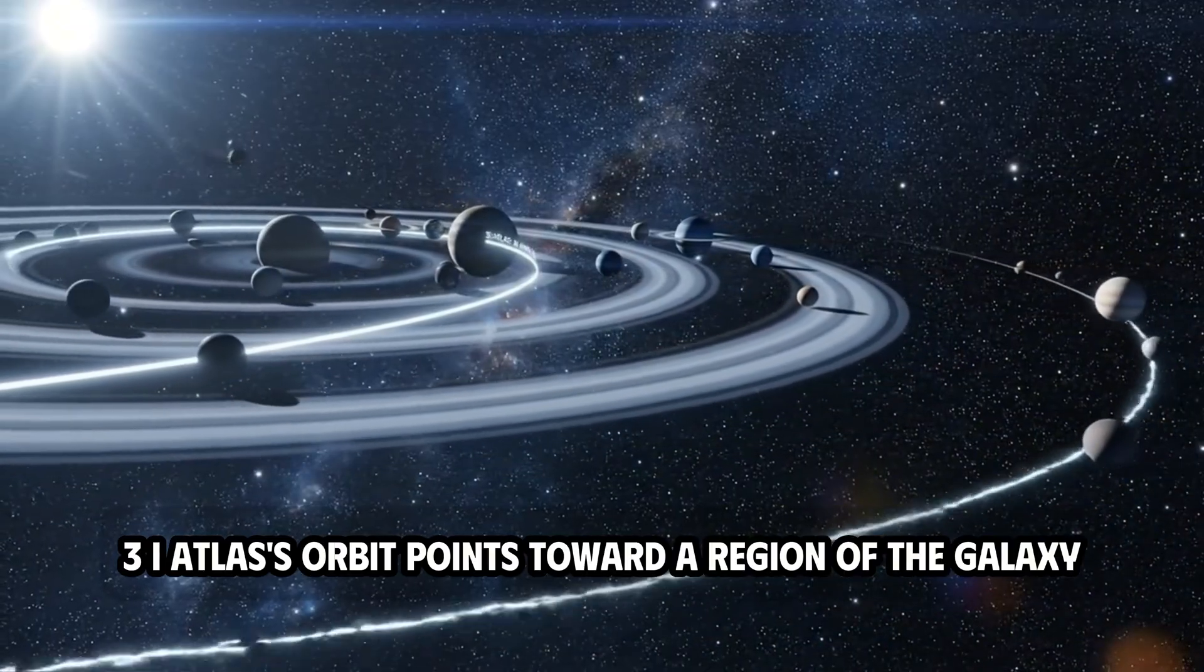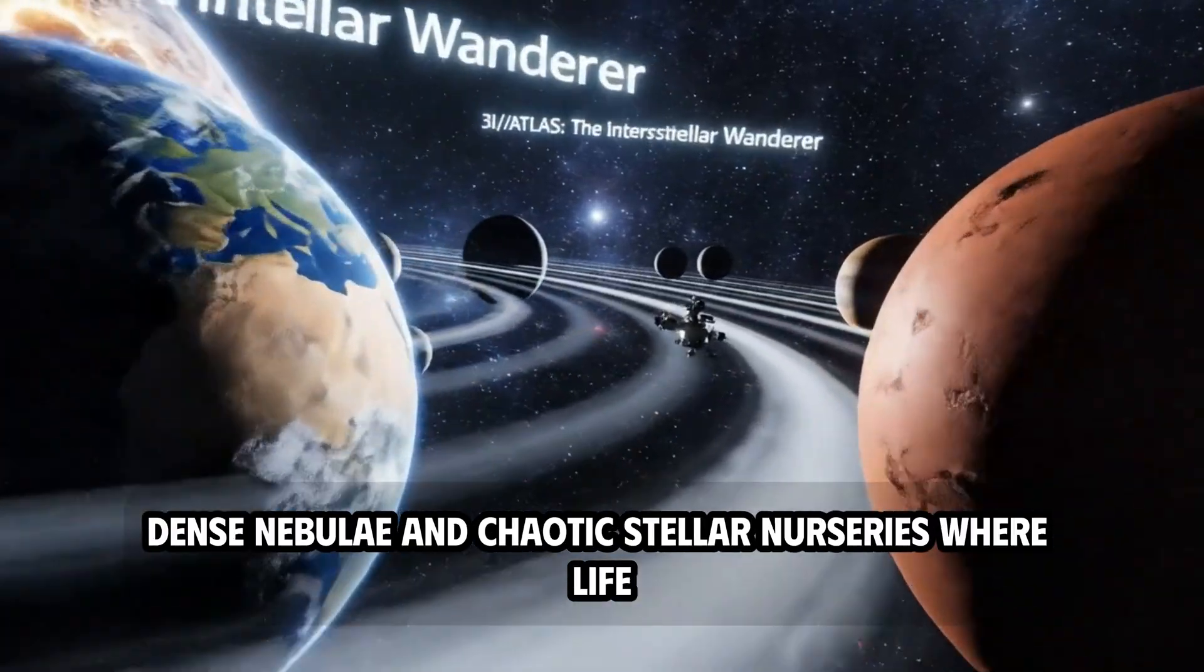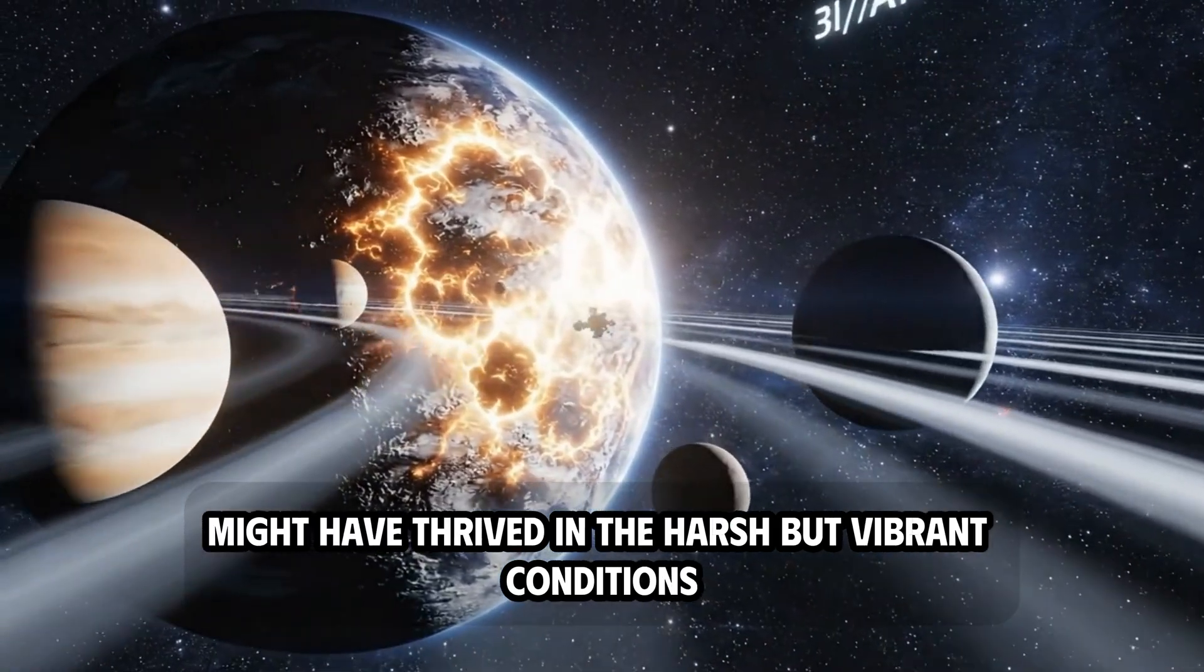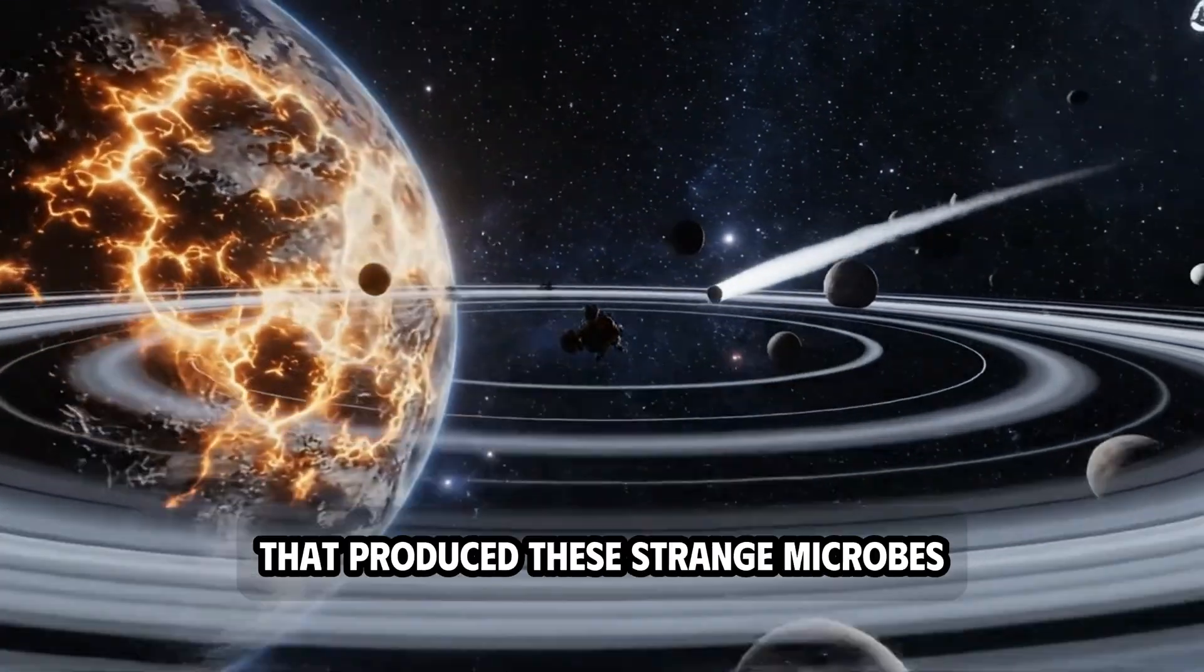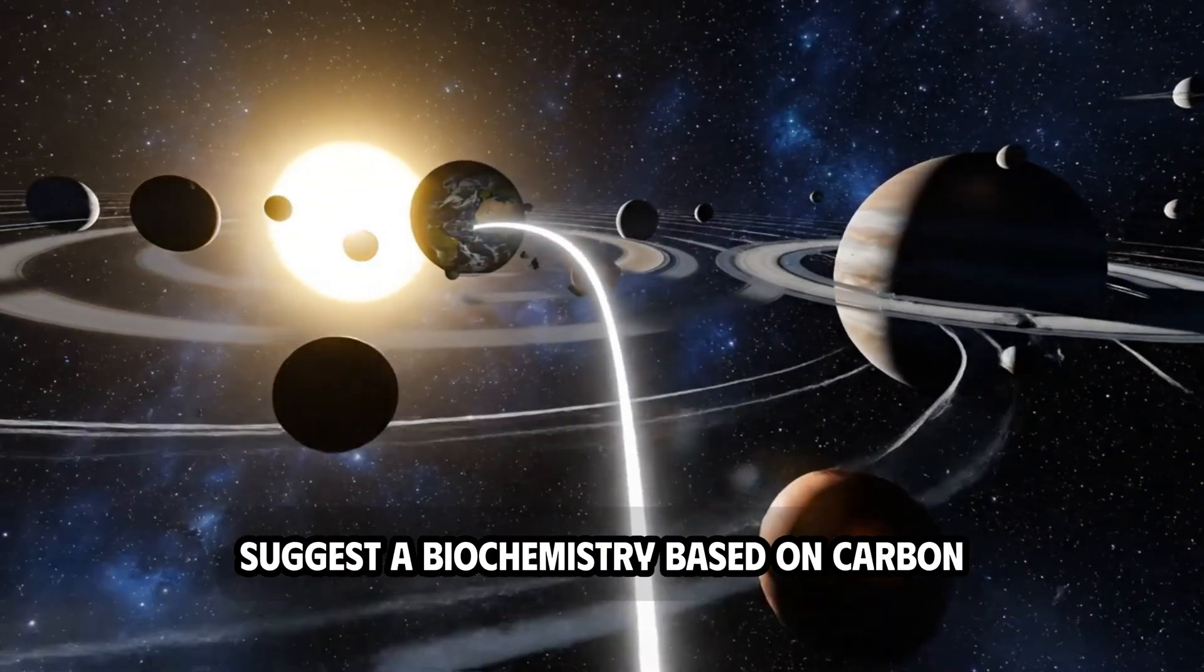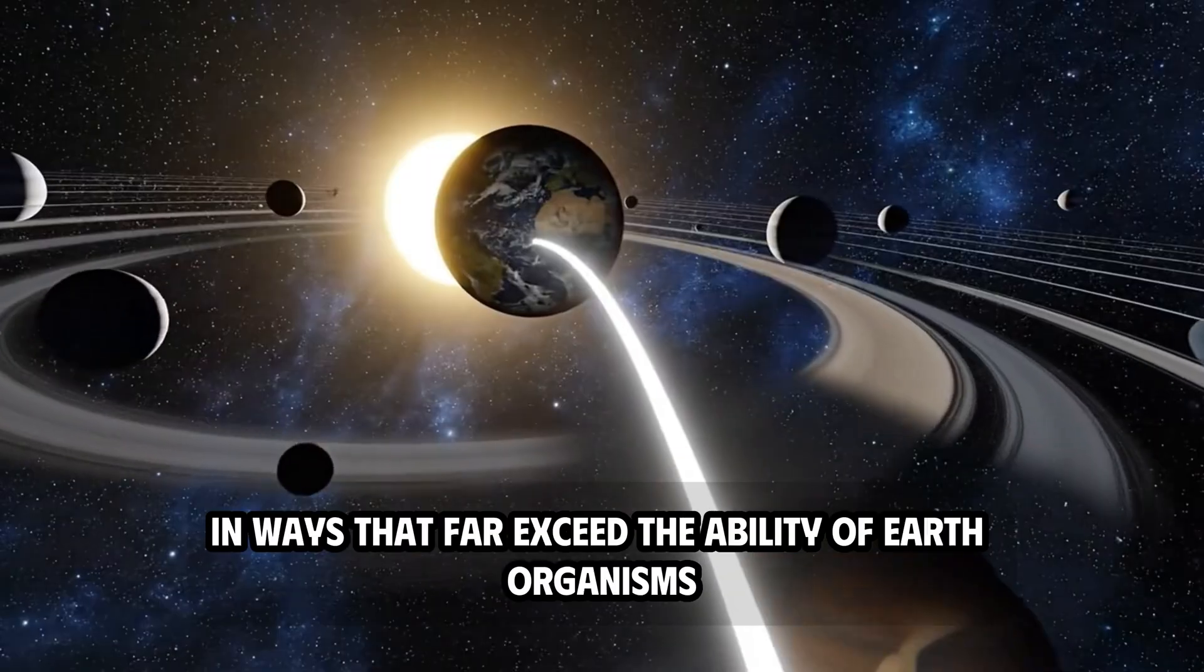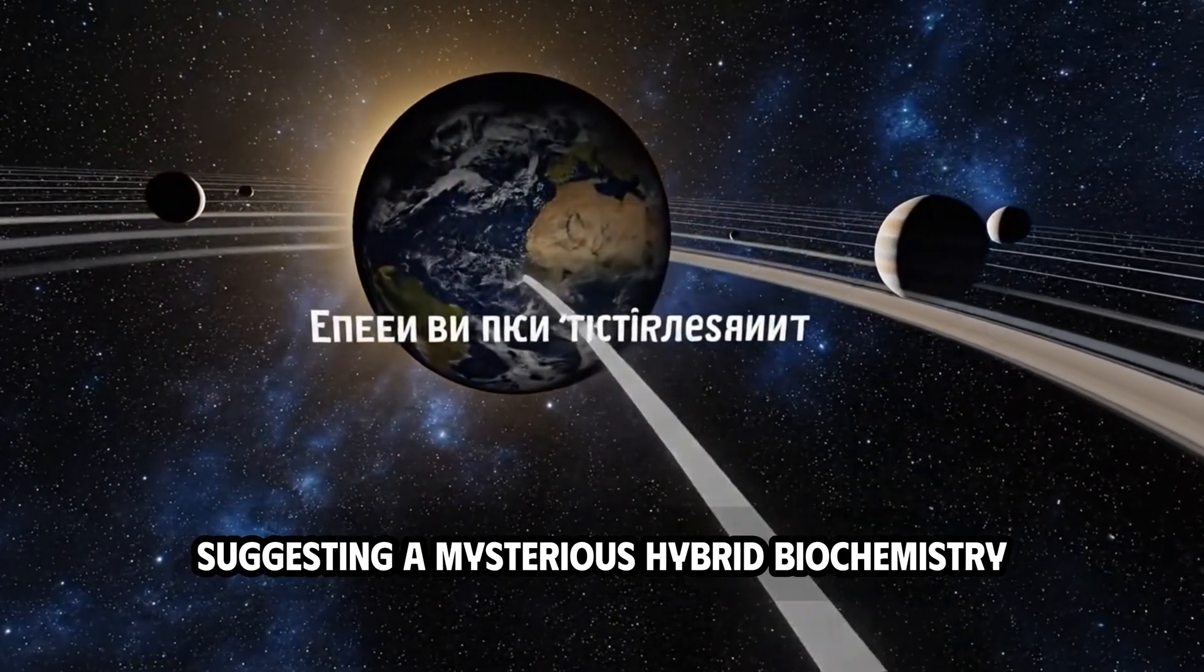3i Atlas's orbit points toward a region of the galaxy rich in star formation, dense nebulae, and chaotic stellar nurseries, where life, if it ever emerged, might have thrived in the harsh but vibrant conditions. Somewhere in that vast expanse of space, there must exist a planetary system that produced these strange microbes. The chemical signatures Webb obtained suggest a biochemistry based on carbon, but not carbon alone. Trace metals intertwine with organic compounds in ways that far exceed the ability of Earth organisms to replicate, suggesting a mysterious hybrid biochemistry.